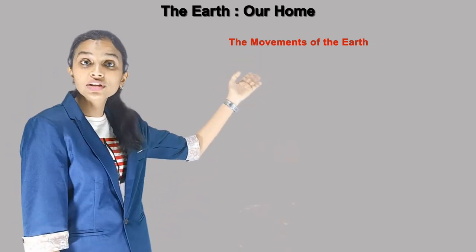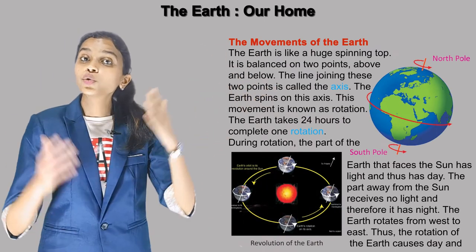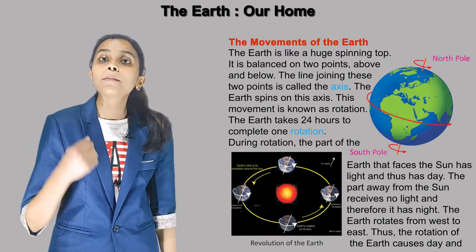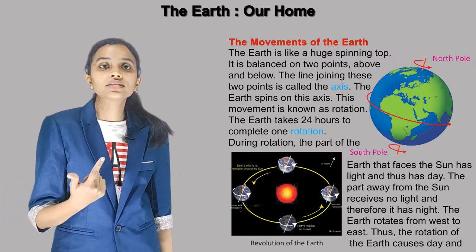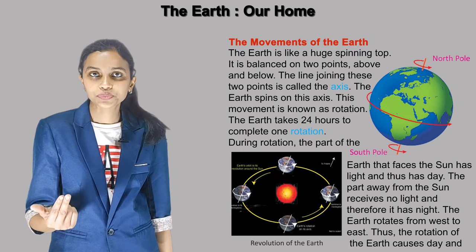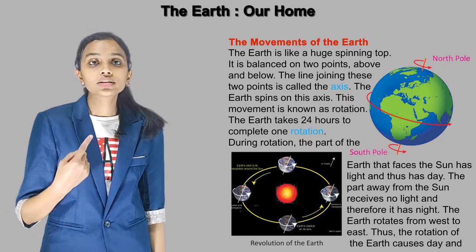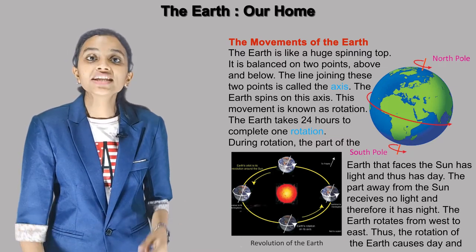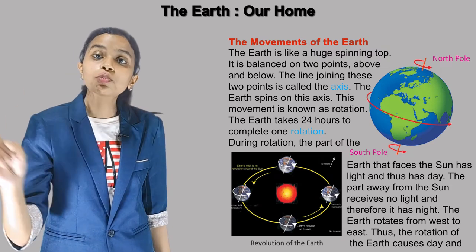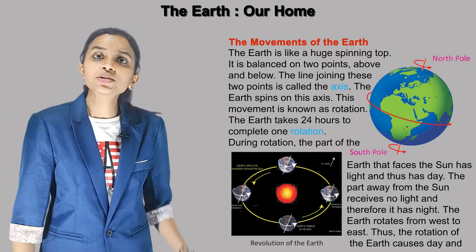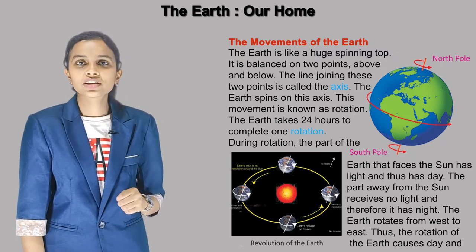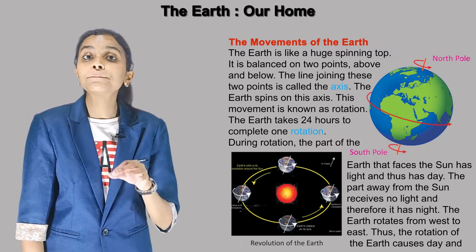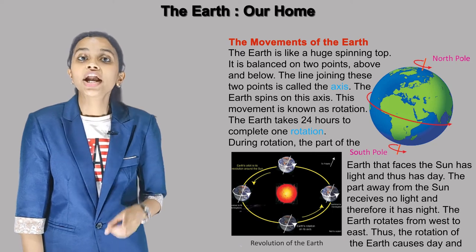Now, the movements of the earth. The earth is like a huge spinning top. It is balanced on two points above and below. The line joining these two points is called the axis. The earth spins on this axis, and this movement is known as rotation.